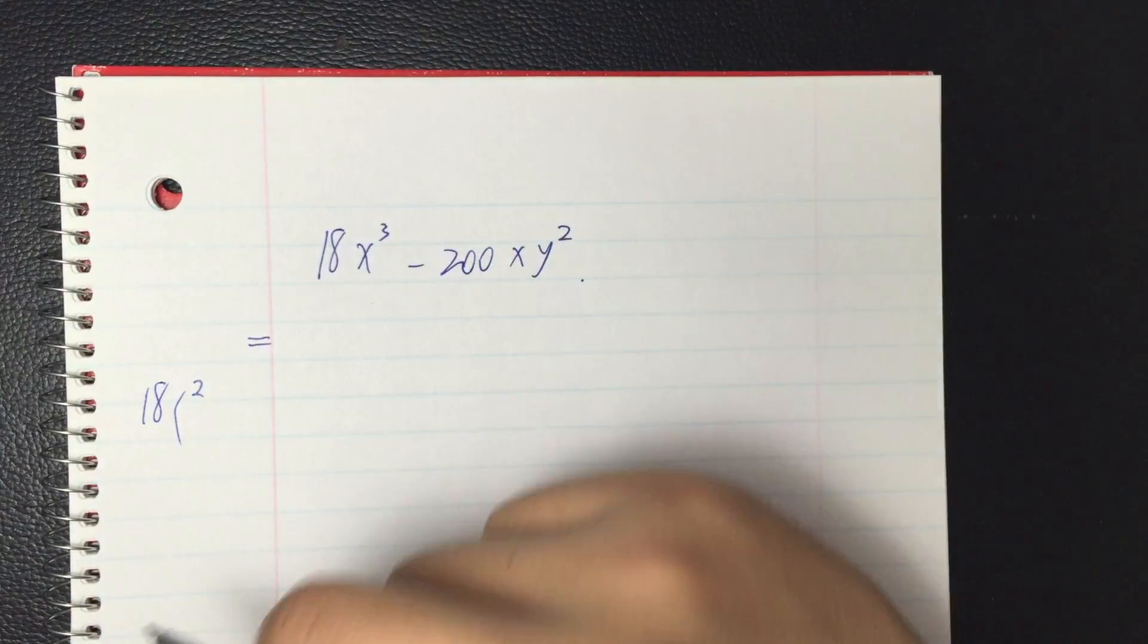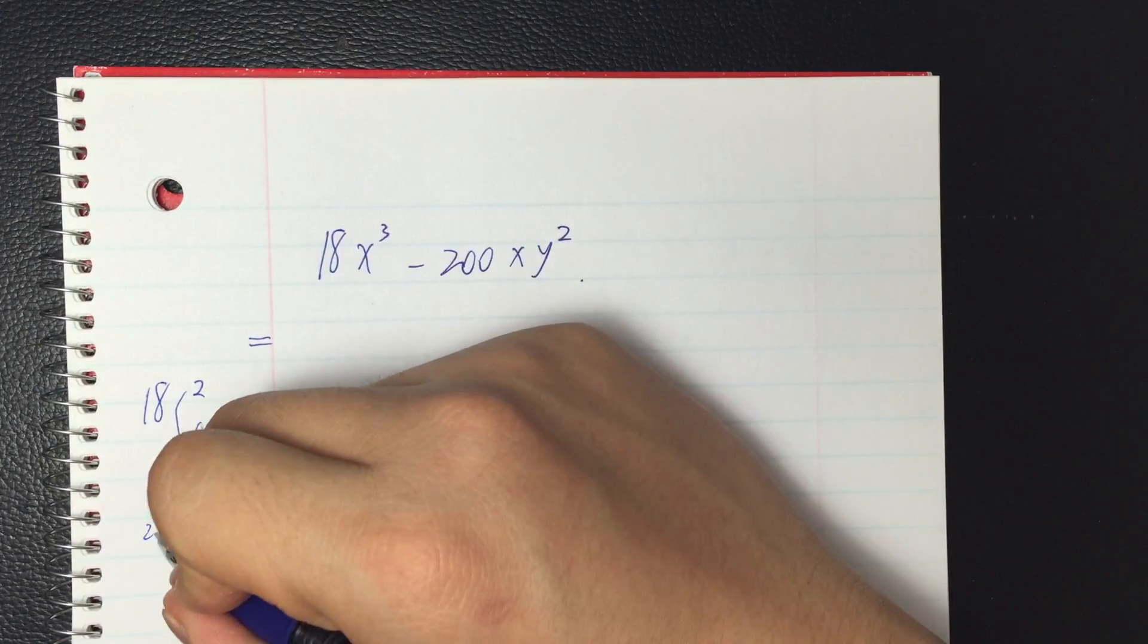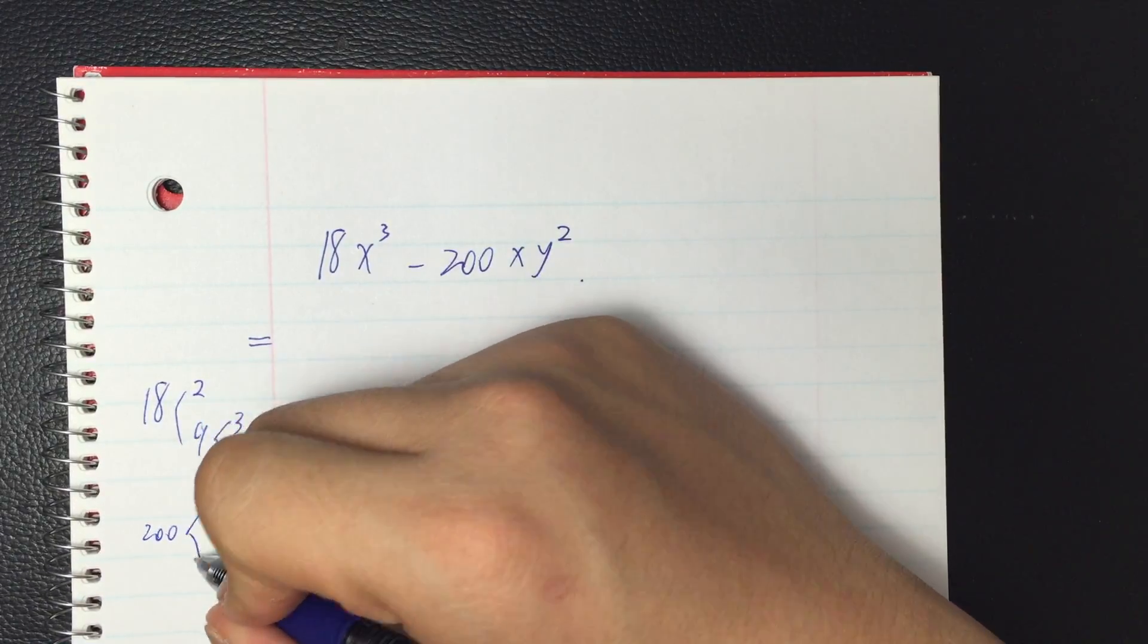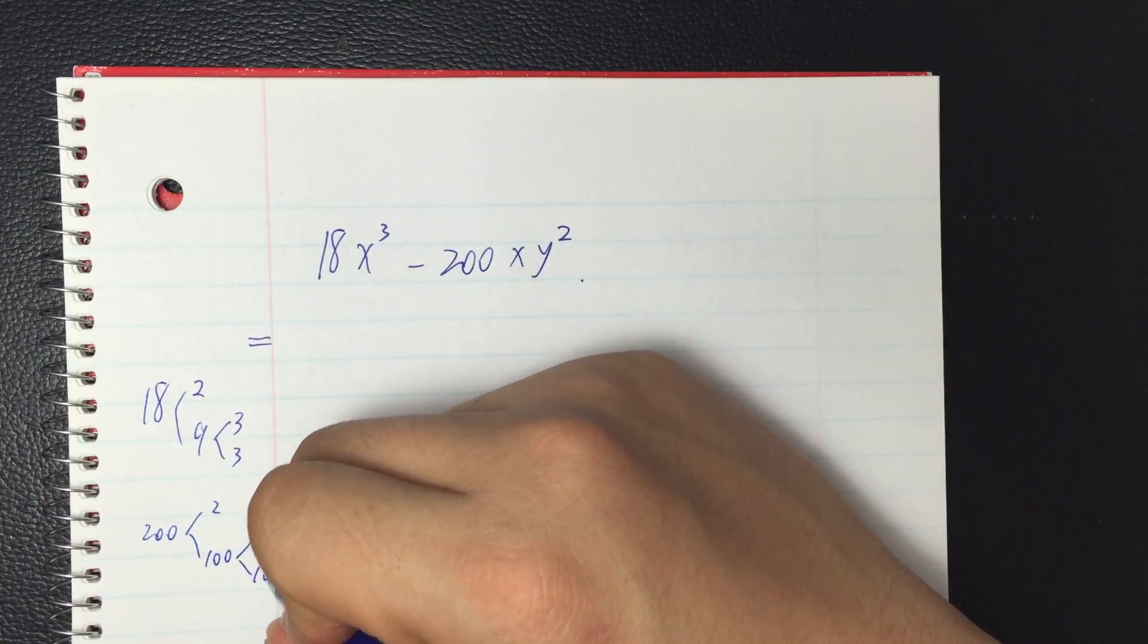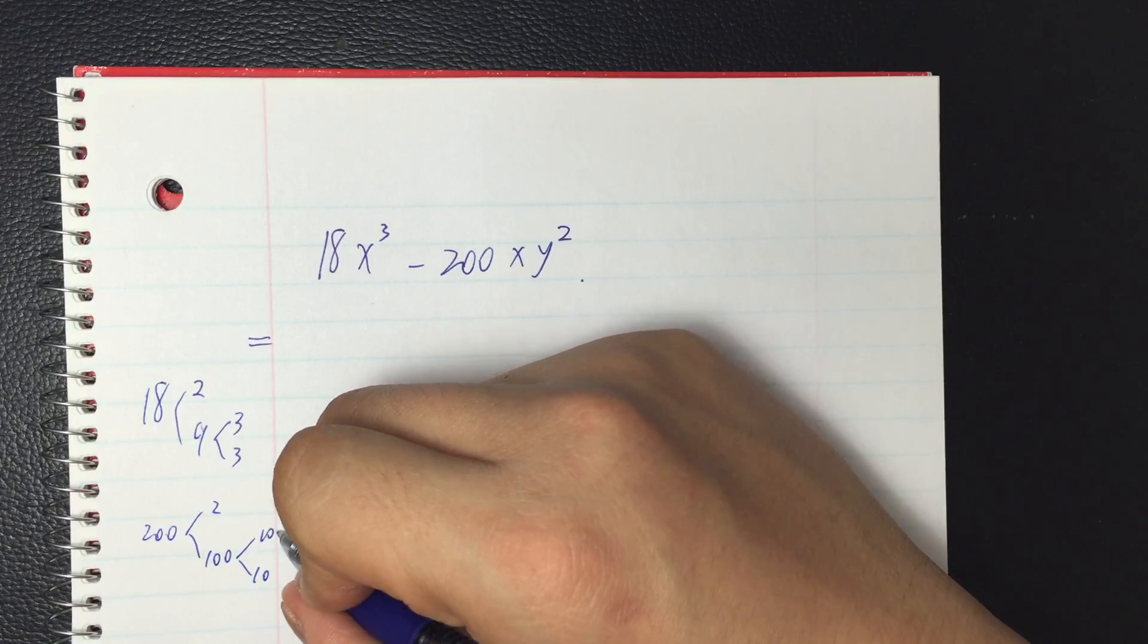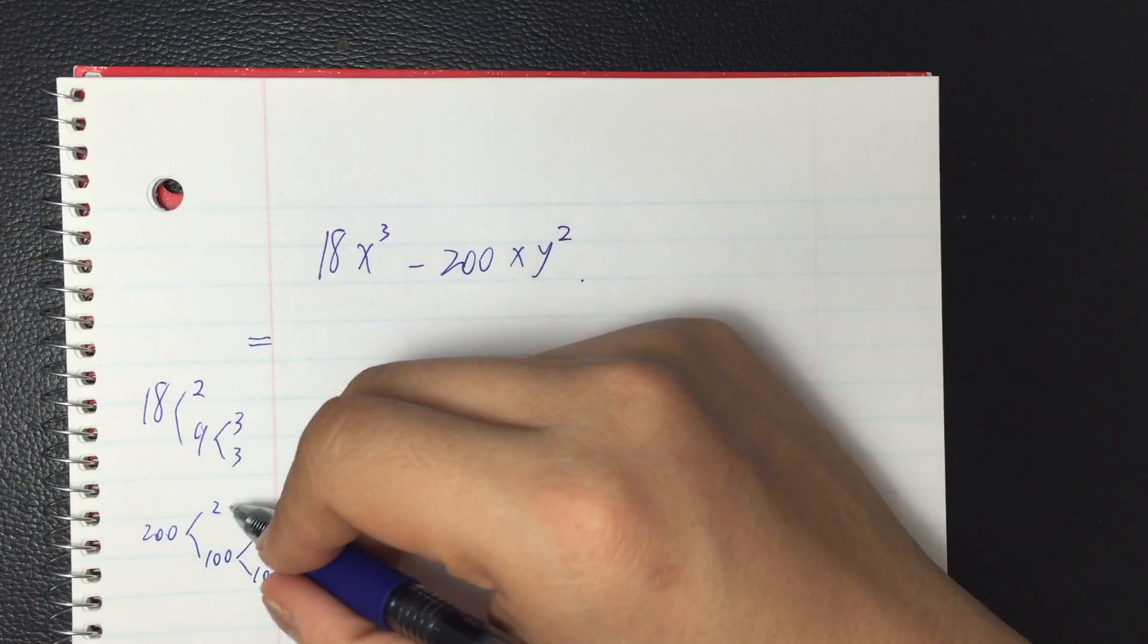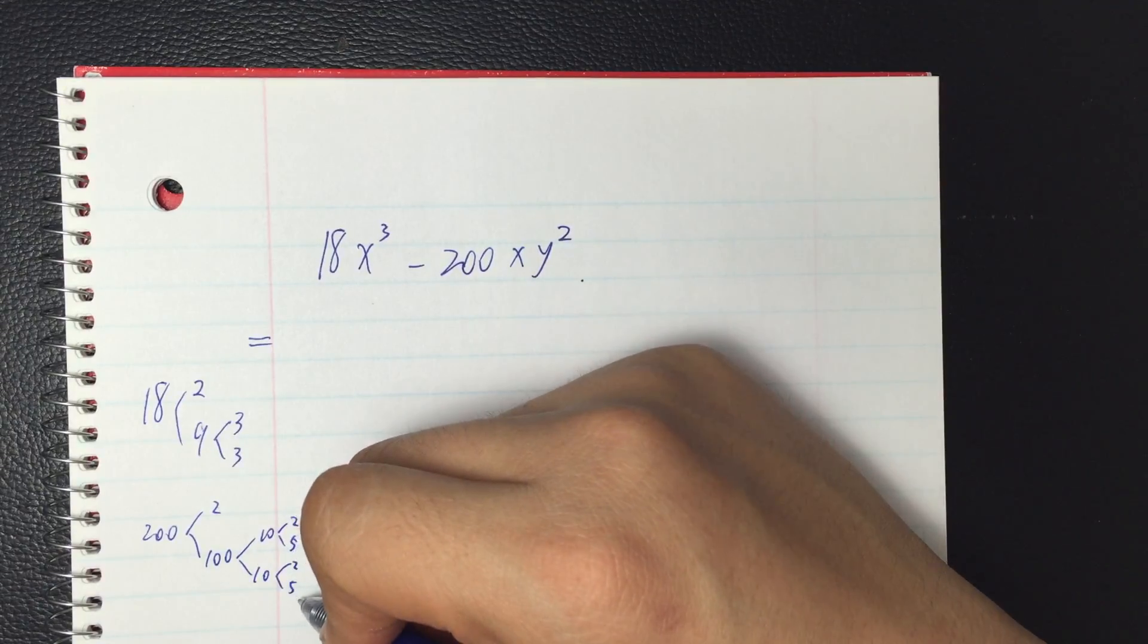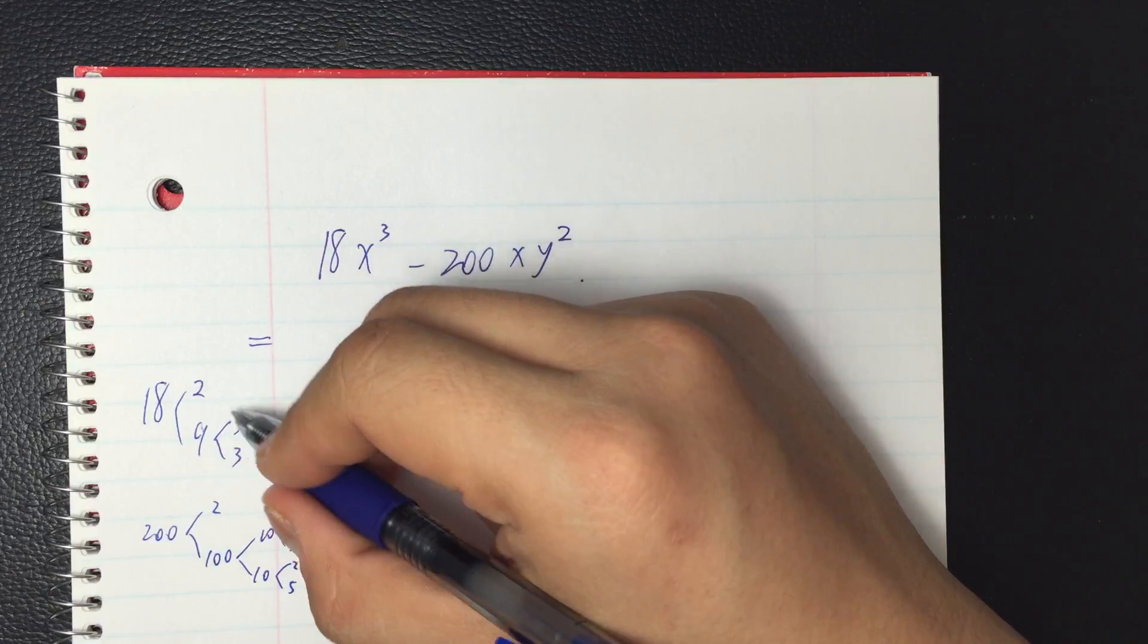18 gives me 2 and 9, and 3 and 3. For 200, I can see 2, and 10 and 10. So I got 2, 2, 2, 2, 5, 5 for 200, and 2, 3, 3 for 18.